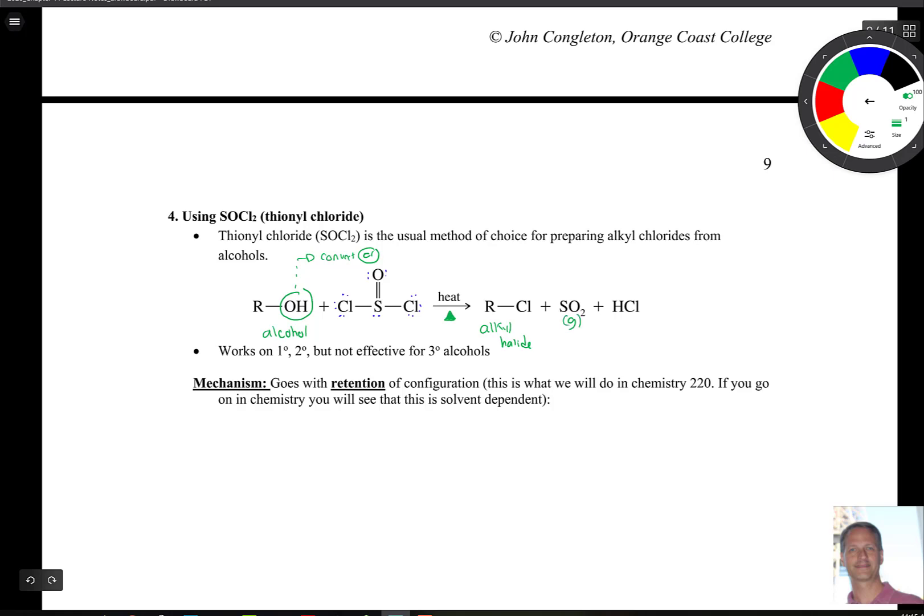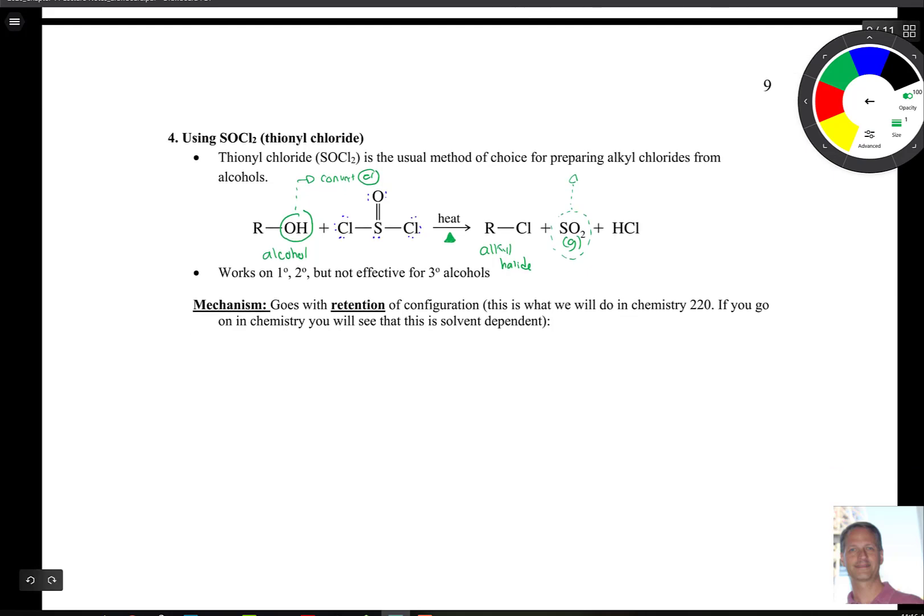And then we'll make here your alkyl halide, SO2 gas, and hydrochloric acid. So the reaction's not reversible, practically speaking, because that SO2 bubbles out of solution and pulls the equilibrium to the right-hand side. So that's a favorable thing. Other thing to mention here too. This works well with primary, secondary, but I'll just say yields are low for tertiary. Mostly because of steric.